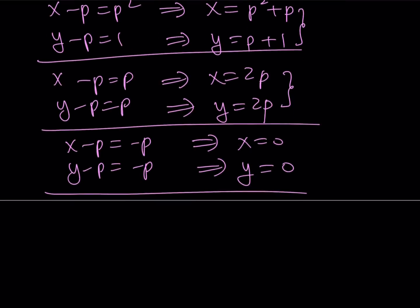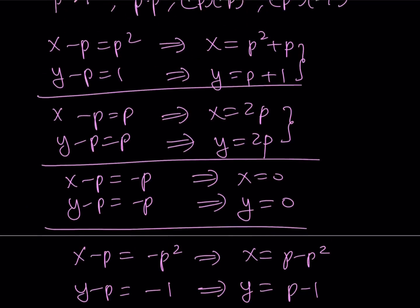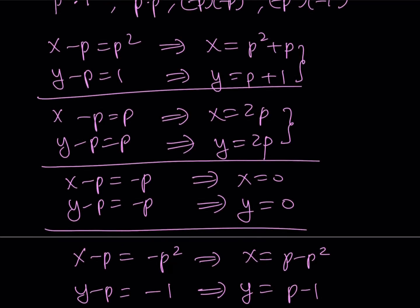And last but not least, we have the X minus P is equal to negative P squared, and Y minus P is equal to negative 1. From here, we get X equals P minus P squared, and Y equals P minus 1. By the way, P minus P squared is going to be a negative quantity, but Y equals P minus 1 is not going to be negative. And that's quite possible in our scenario. So we got those four cases.